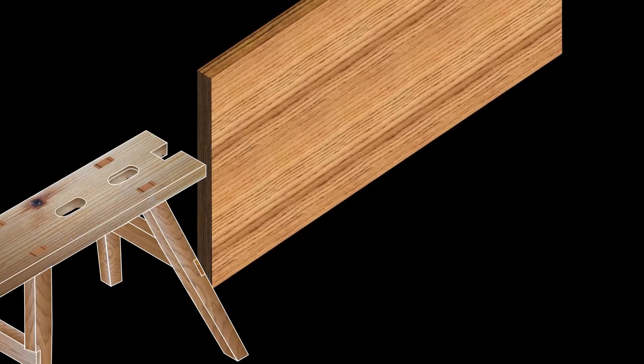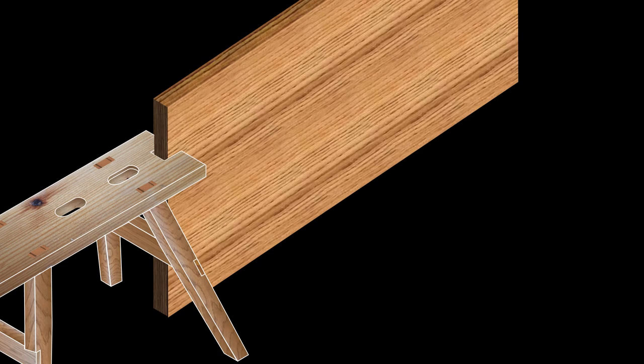Here we have an example of why the end of the sawstool has a notch on it. This notch is done to accommodate the thickness of a typical door with a little bit of spare, so you can secure a door in such a way that it can be planed while you are fitting it into a frame.